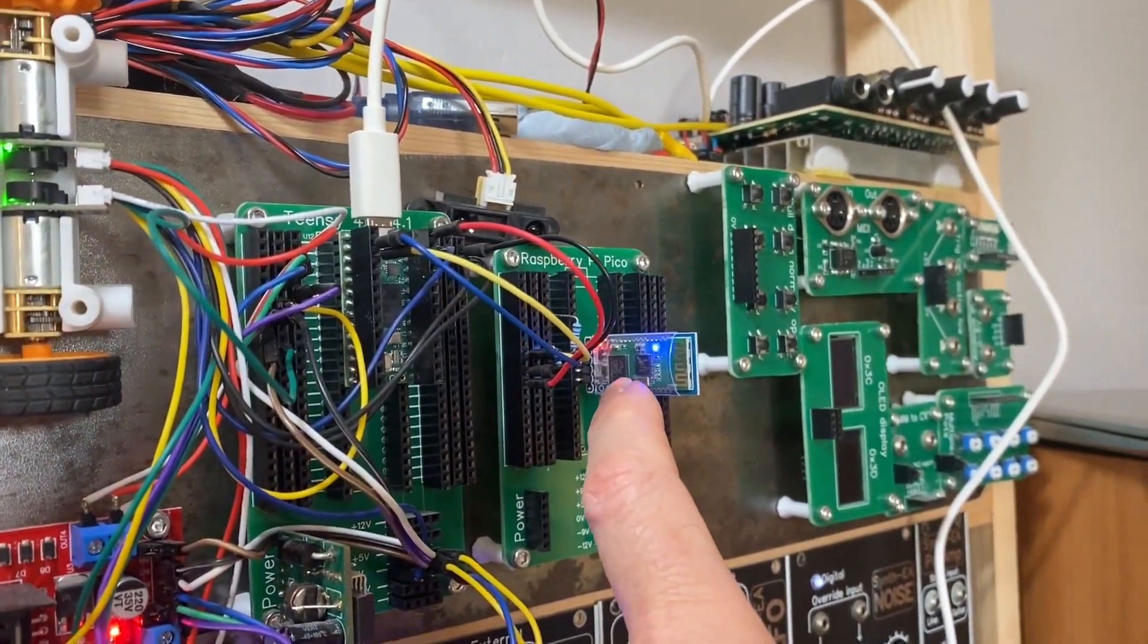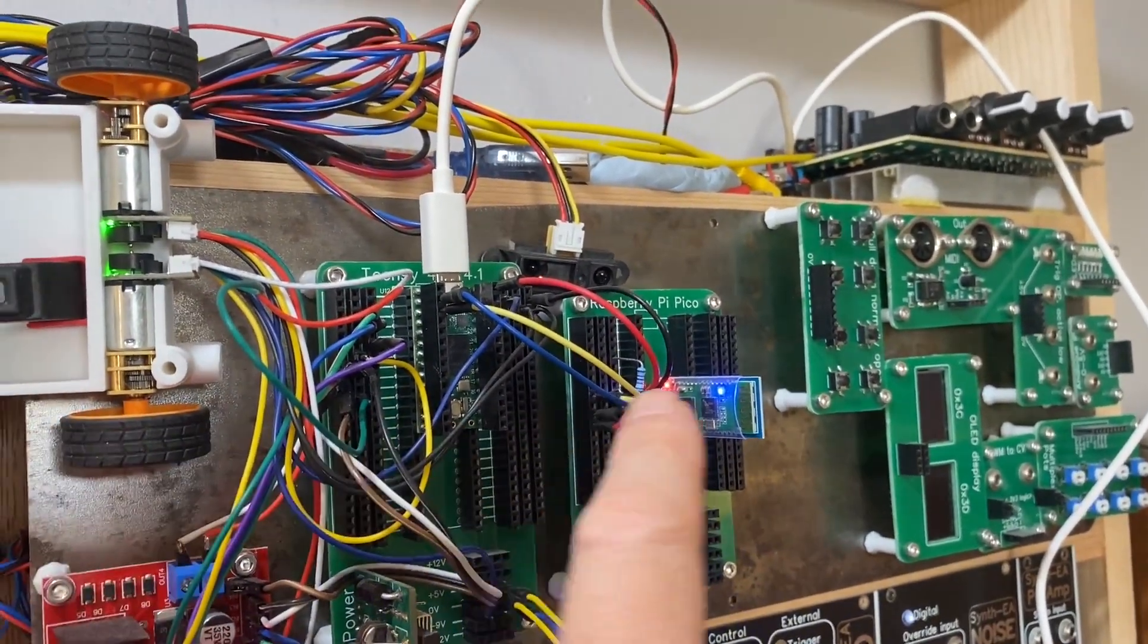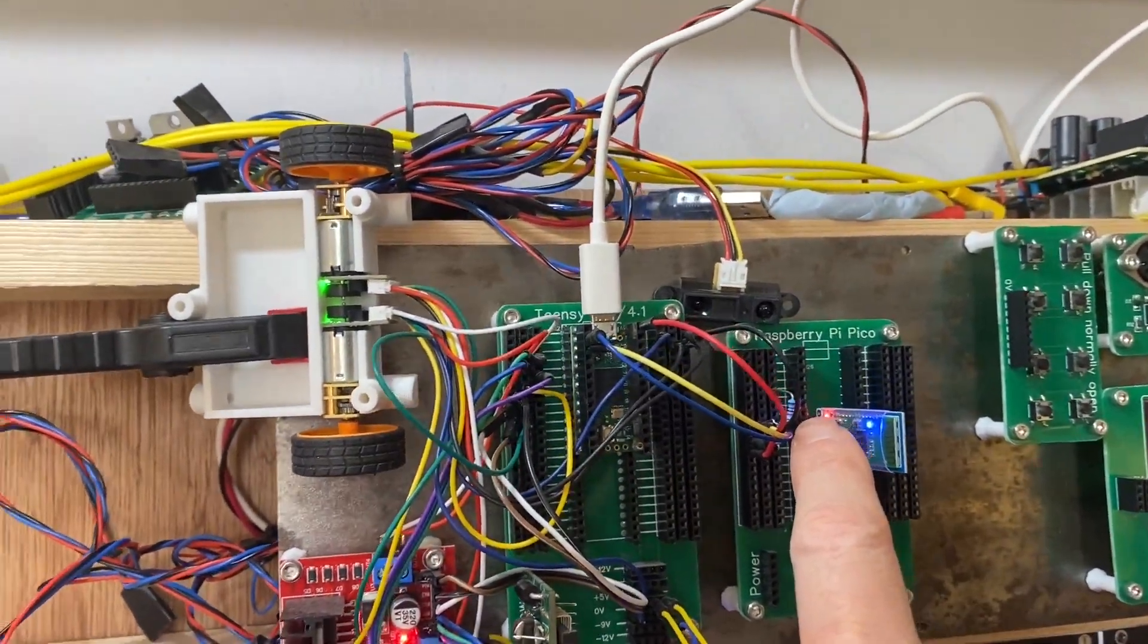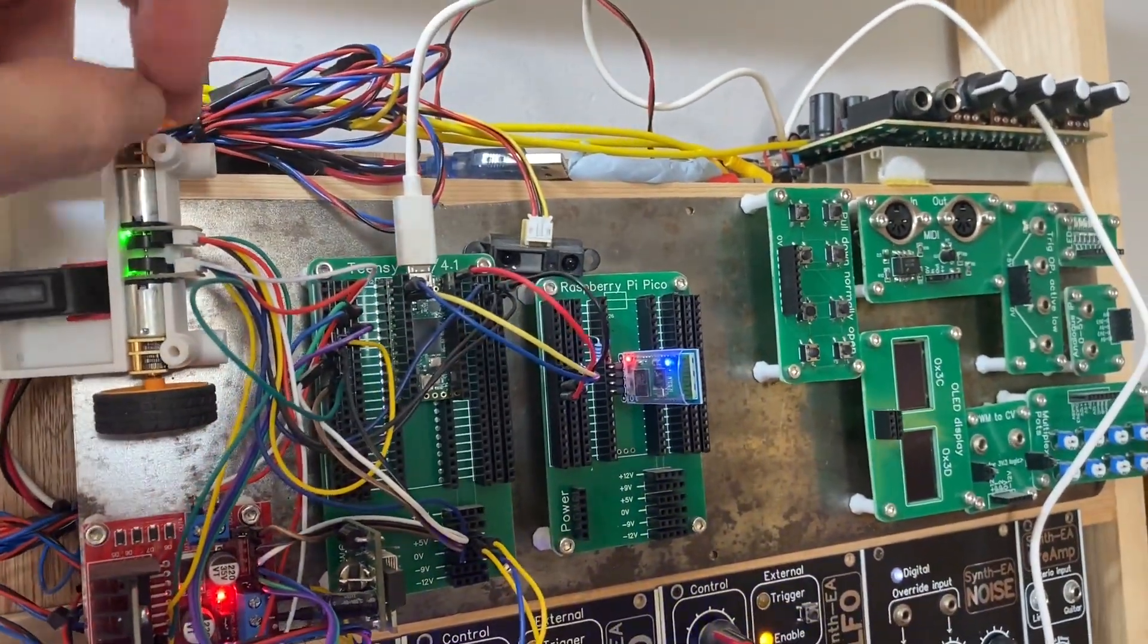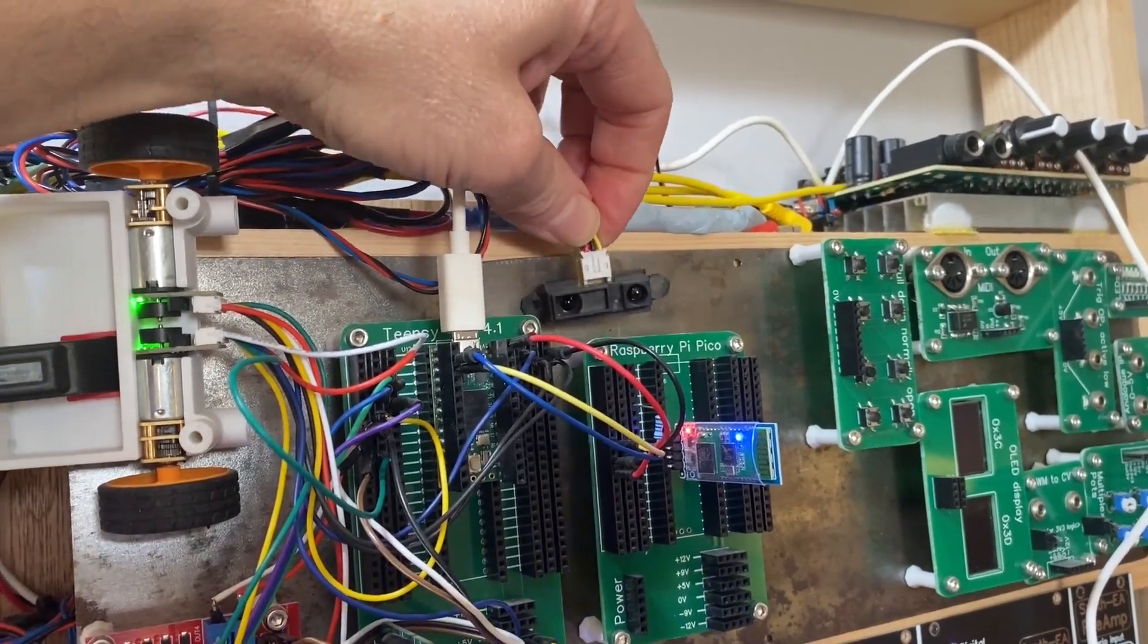Here I have got a Bluetooth module, so the idea is when the mouse is going around the maze I can talk to it over Bluetooth. This is a distance sensor - hopefully I'm going to have three of those.